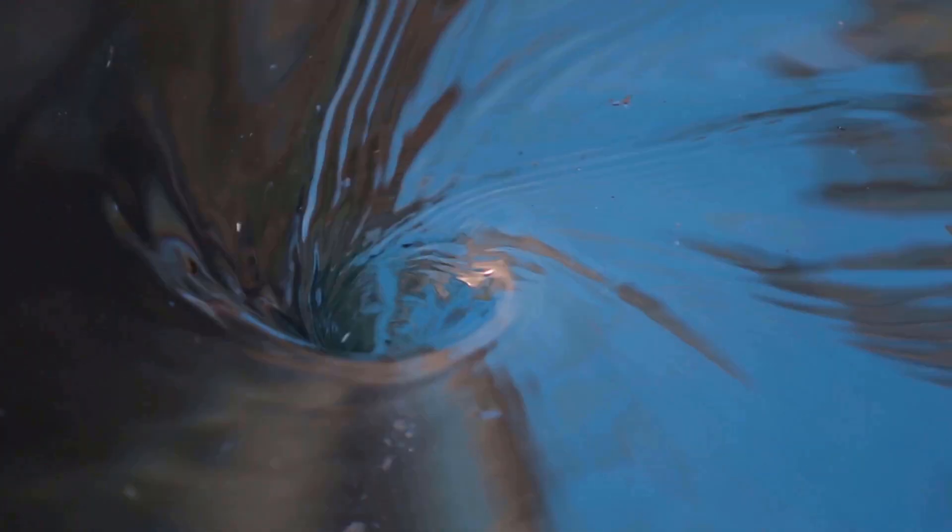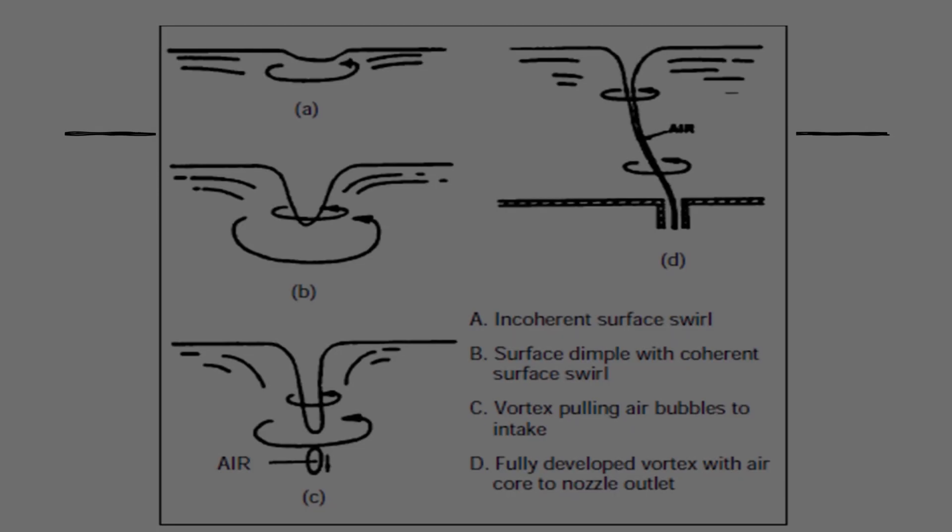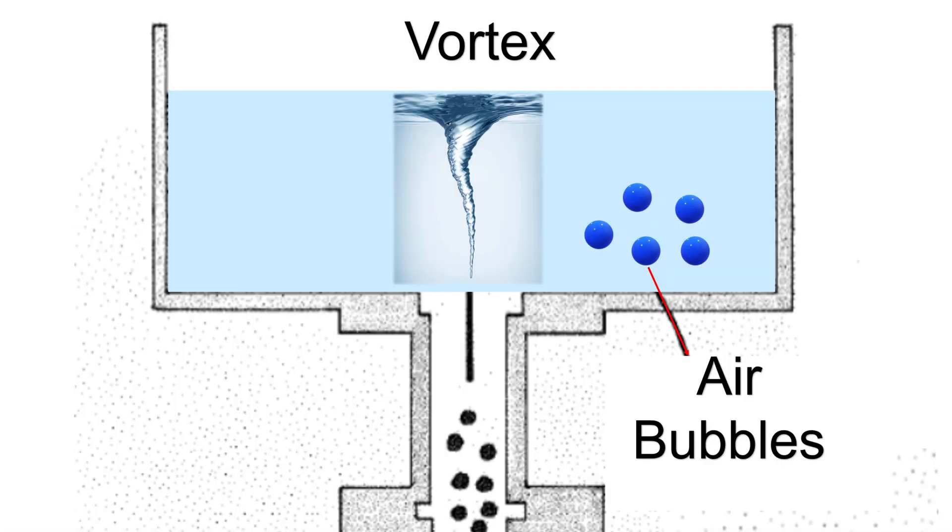Vortexing. Vortex is a whirlpool motion of liquids which will invite more air into the system. It is one of the key contributors to air entrainment but a least focused element on the pump system.